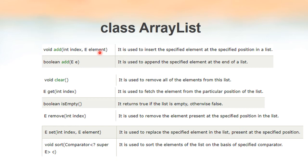The element specified as the second parameter will be inserted at the index specified as the first parameter. If we simply want to add an element without specifying a location, we can use add(E element) — its return type is boolean, returning true if the element was inserted successfully. In this case the insertion takes place at the end of the list. We also have the clear() method to remove all elements from the list.